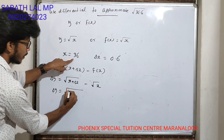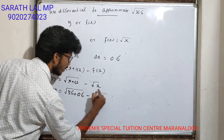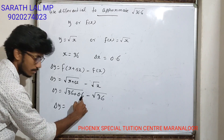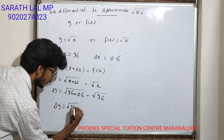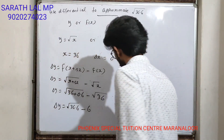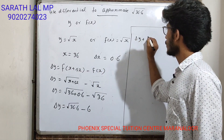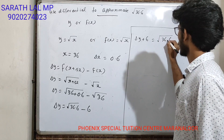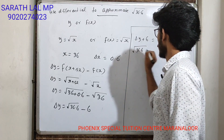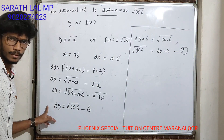Substituting: x equals 36 and delta x equals 0.6, so delta y equals root of 36 plus 0.6 minus root of 36, which gives root 36.6 minus root 36. Rearranging: root 36.6 equals delta y plus 6. That is step number 1.